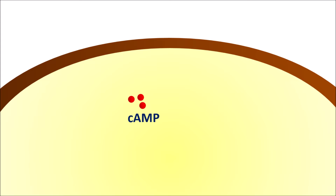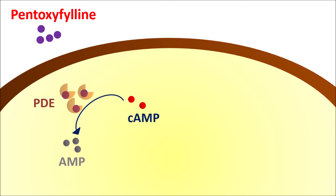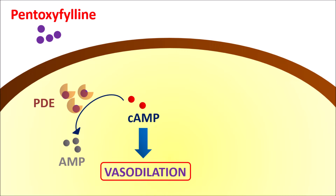Apart from these actions, within the vascular smooth muscle, cyclic AMP plays an important role. Cyclic AMP can be metabolized to AMP by the enzyme phosphodiesterase, reducing cyclic AMP levels within blood vessels. Pentoxyphilin can block this phosphodiesterase enzyme activity, increasing cyclic AMP levels. When cyclic AMP levels are increased, it produces vasodilation. In this way, Pentoxyphilin produces a vasodilatory response by inhibiting phosphodiesterase enzyme activity, reducing blood viscosity and increasing blood flow.